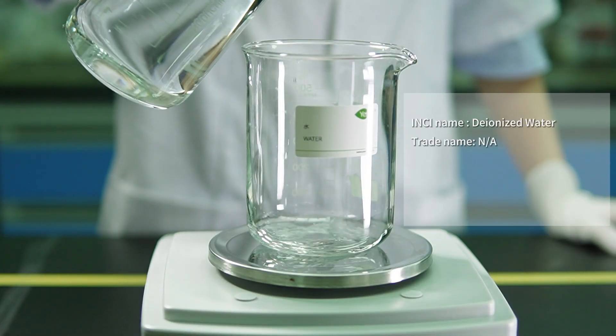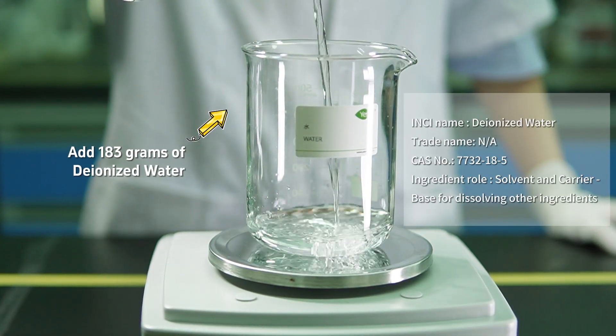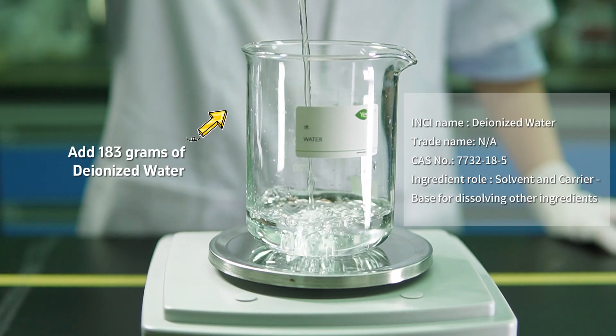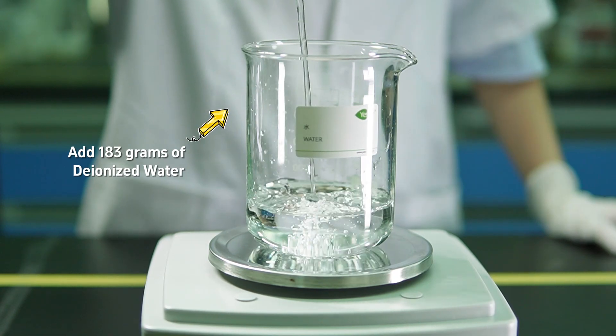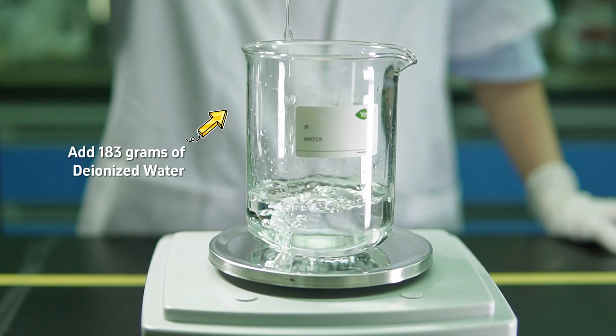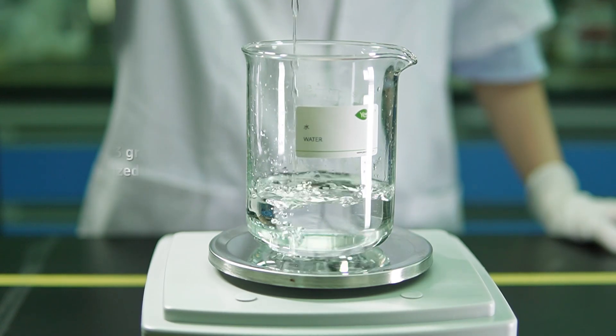In the first phase, we start with deionized water, which acts as our solvent and carrier. We begin by adding 183 grams of it. This provides a great base to dissolve all the other key ingredients that we'll be adding shortly in the Rose Petal Reverie Bath Gel.